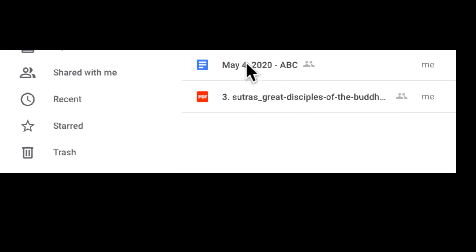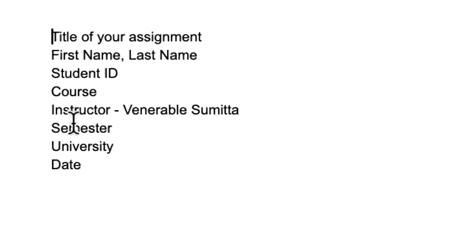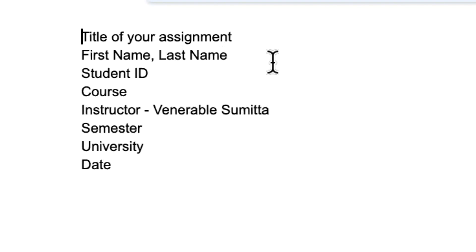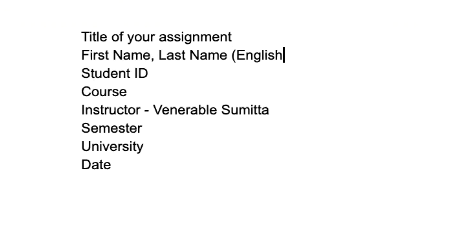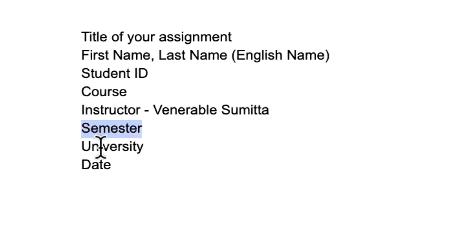I want to discuss what you have to do here. In all your assignments, this formality should be there: the title of your assignment should be on top, then first name and last name. You can also add your English name or any nickname within brackets. Then student ID, course instructor, semester, university, and date. All these details should be there.